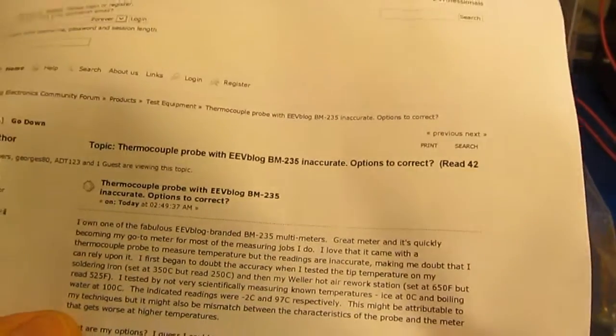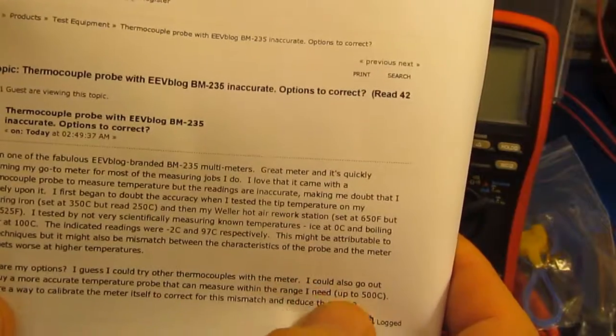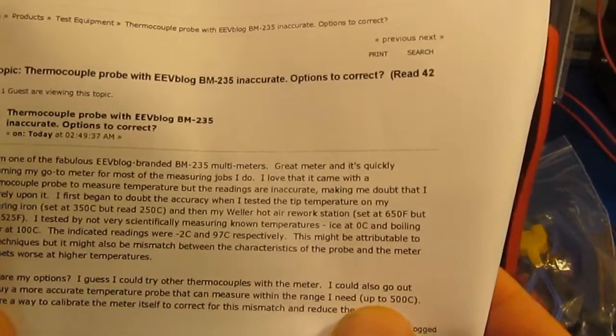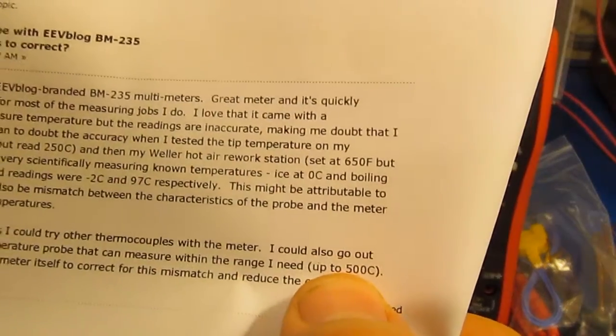Then he goes on to talk about it maybe being attributed to those techniques or also a mismatch between the characteristics of the probe and the meter. His last comments, he talks about he could go out and buy a more accurate temperature probe that can measure within the range he needs up to 500 degrees C.